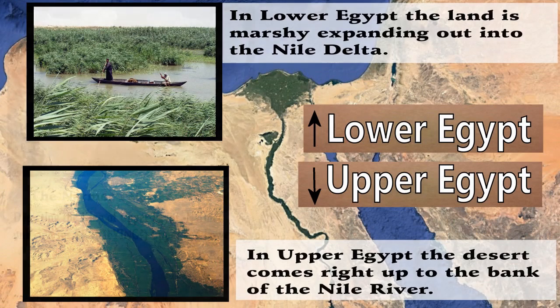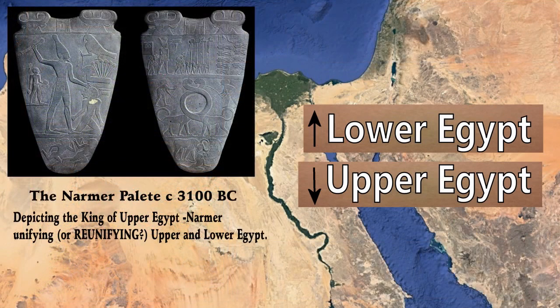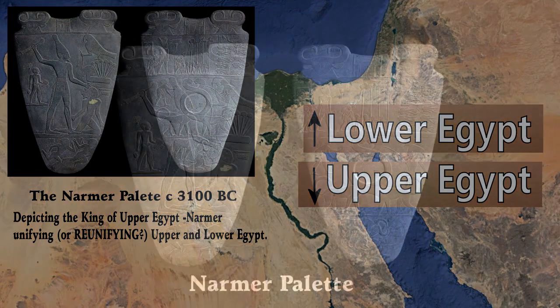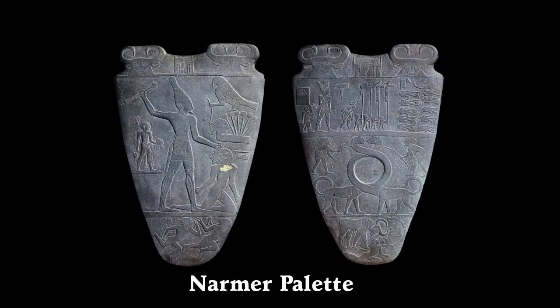Let's go back in history to the year 3100 BC and the very famous Narmer Palette, which depicts King Narmer, the king of upper Egypt, unifying — or I would say reunifying — both upper and lower Egypt, these two distinct environmental and cultural areas. If we examine the Narmer Palette we see quite a few interesting things, including the goddess Hathor connected to cattle and the bull.